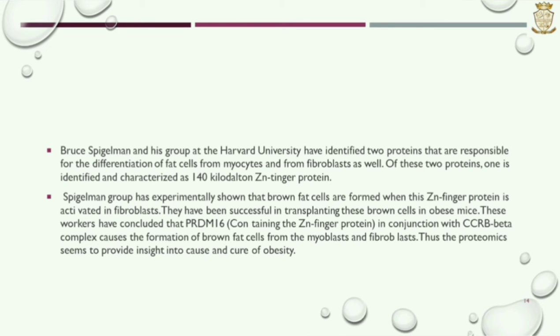Bruce Spiegelman and his group have identified two proteins that are responsible for the differentiation of fat cells from myocytes and from fibroblasts as well. Of these proteins, one is identified and characterized as a 140 kilodalton zinc finger protein. The Spiegelman group has experimentally shown that brown fat cells are formed when this zinc finger protein is activated in fibroblasts.